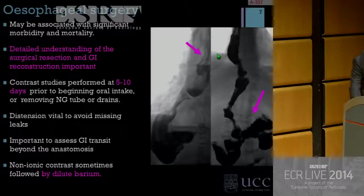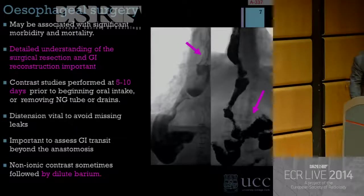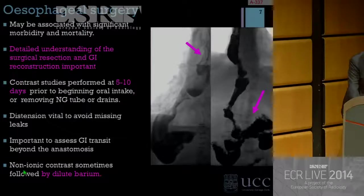I'd like to move on to the esophagus. Esophageal surgery may be associated with significant morbidity and mortality, and we must have a detailed understanding of the surgical resection and GI reconstruction. Contrast studies are typically performed at five to ten days prior to beginning oral intake or removing nasogastric tubes or drains. A key point: we must distend the esophagus or we'll miss leaks, and it's very important to assess GI transit beyond the anastomosis, as these patients are prone to ileus and delayed gastric emptying.